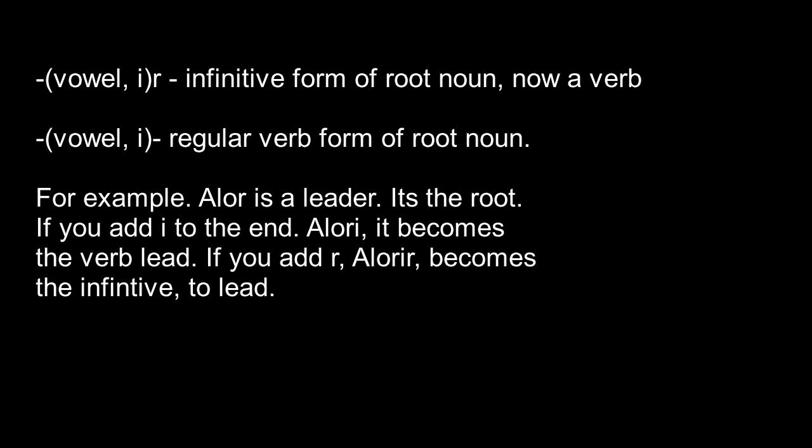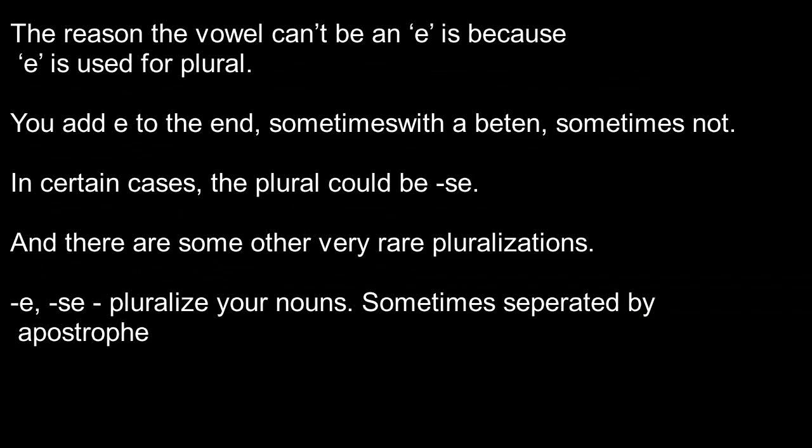For example, 'alure' means leader — it's the root noun. If you add an I to the end, it becomes 'aluri,' which is the verb 'lead.' If you add an R, it becomes 'alurir,' the infinitive 'to lead.' So just to cover that again: you have your vowel and an R. That vowel is usually an I, not an E, and you put that vowel and that R on the end of the root — you have your infinitive. If there's no R, it's just a regular old verb. Remember how I said you can't have that vowel be E? The reason you cannot use E for your verb is because E is used for the plural.